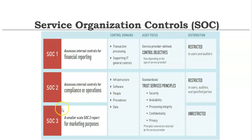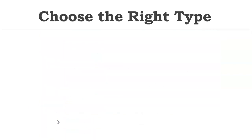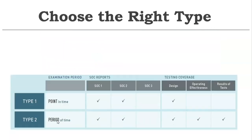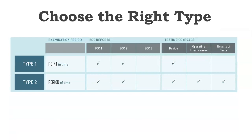SOC 2 is a restricted report for auditors, specific parties, or prospective customers to demonstrate how effectively an organization operates. SOC 3 is a marketing-purpose report that is publicly available. It is also based on the same five trust principles. Remember: trust principles are not used in SOC 1 — they are used in SOC 2 and SOC 3, which is the publicly distributable report.